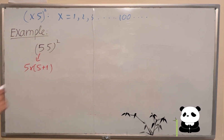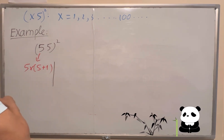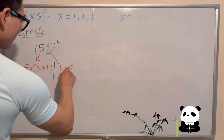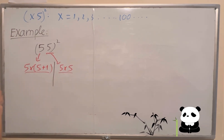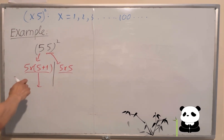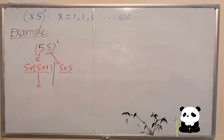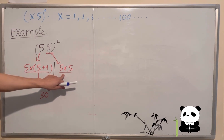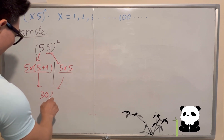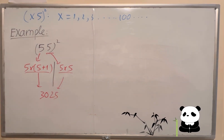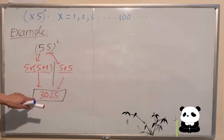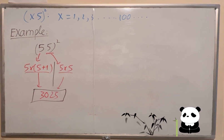Then here I calculate 5 times 5. The answer: 5 plus 1 is 6, and 6 times 5 is 30. Then 5 times 5 is 25, which you write down here. So 55 squared equals 3025.